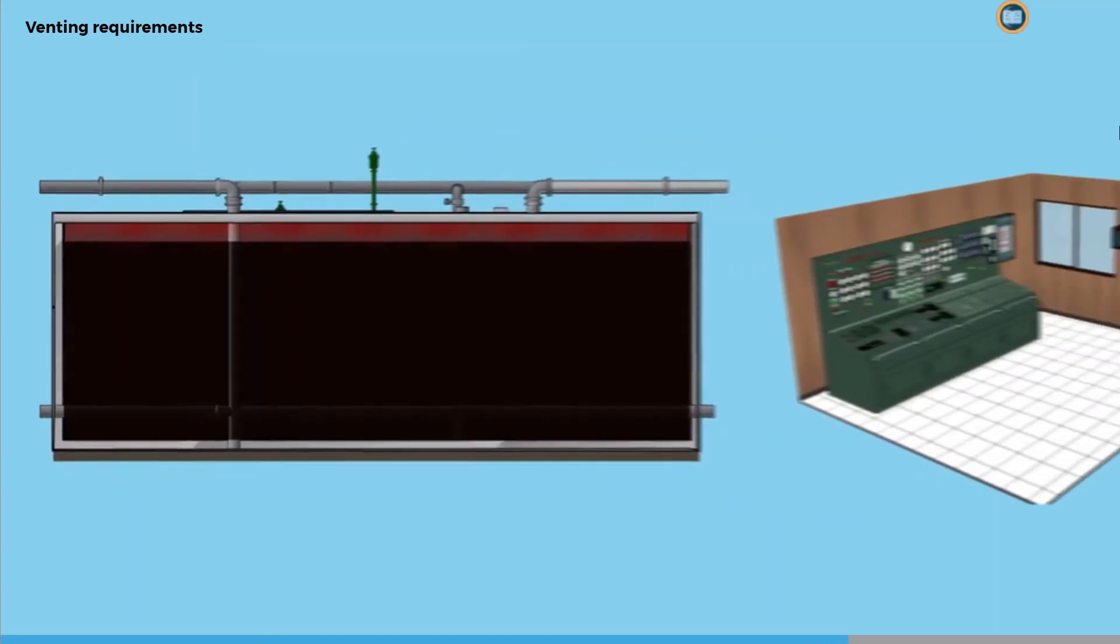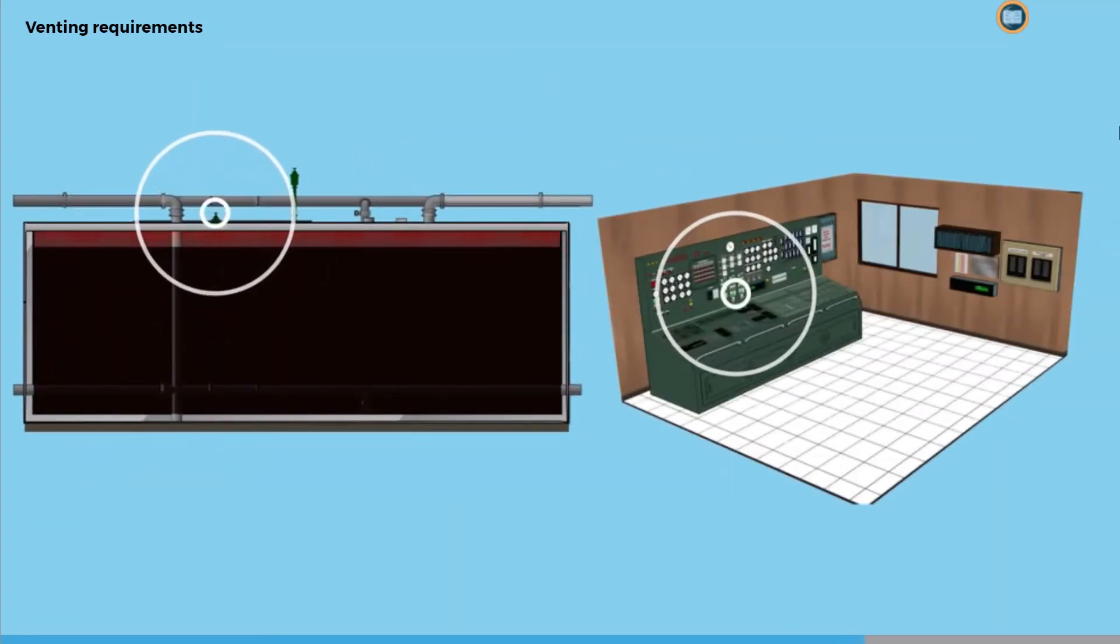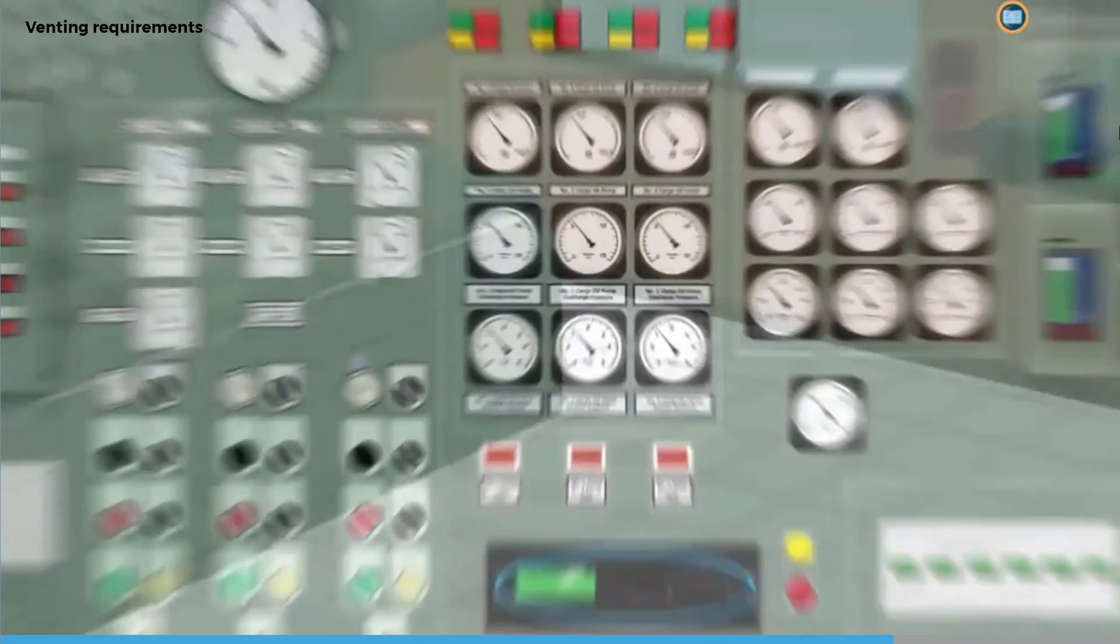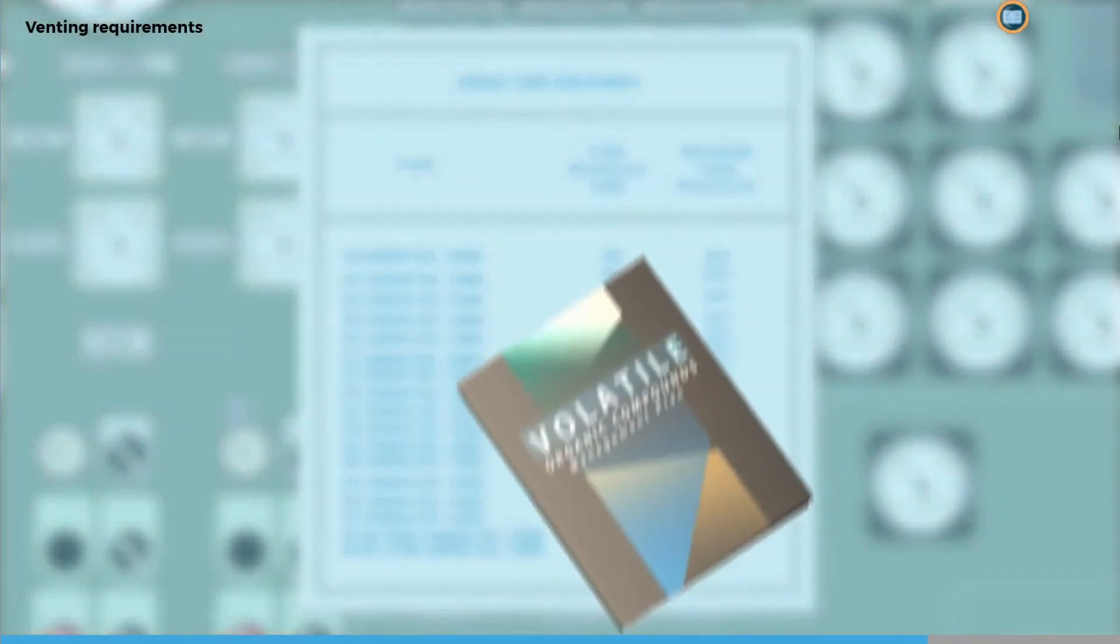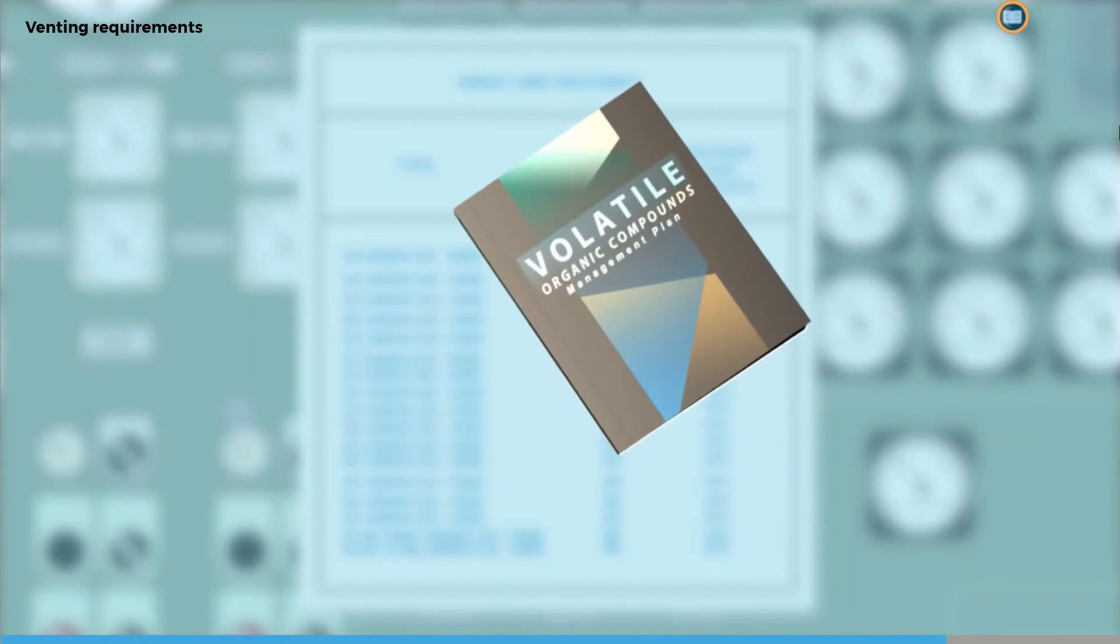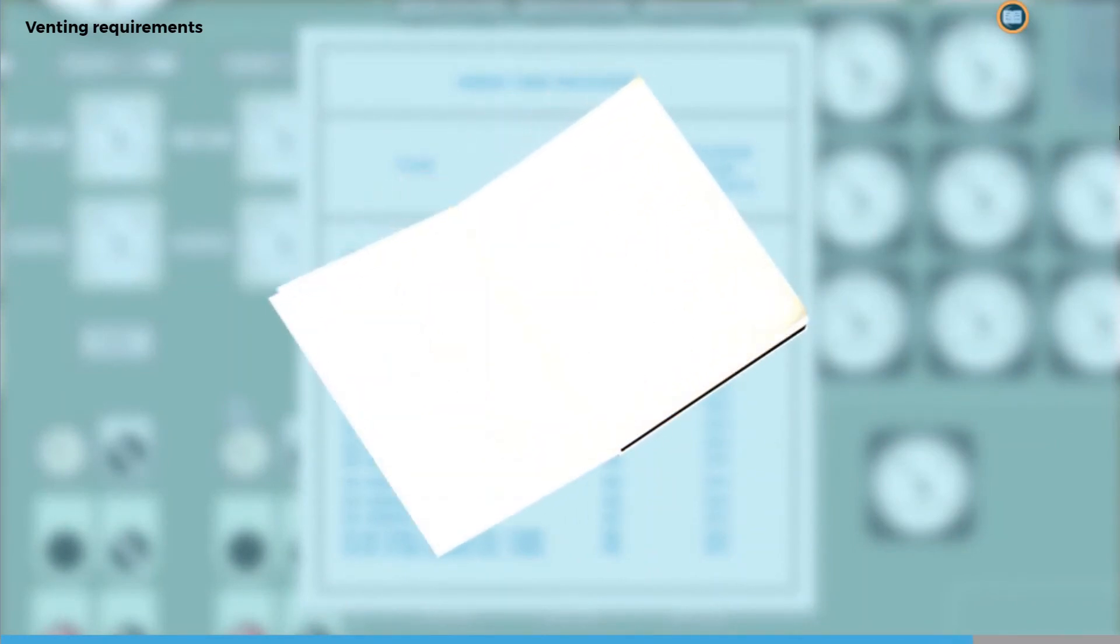In this case, each tank must be fitted with pressure sensors allowing the pressure to be monitored from the cargo control room. The approved VOC management plan will fully describe the arrangements on board.